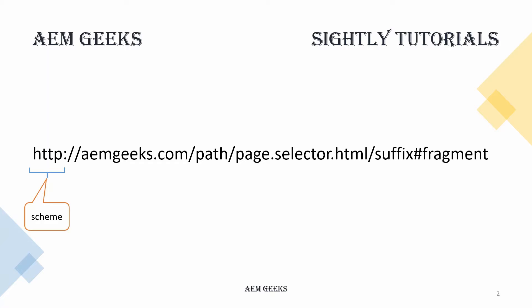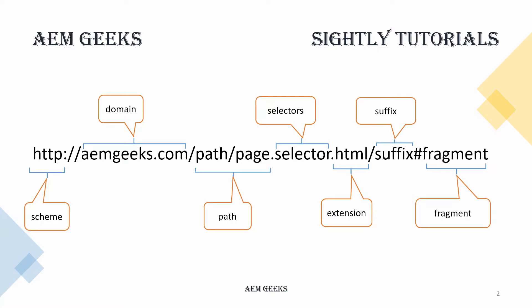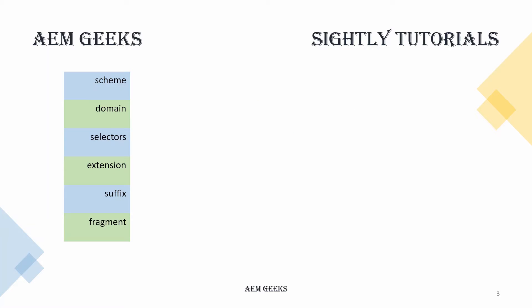The first part is the scheme — in expression language or in Sitely this is called scheme. Then there is the domain, and whatever path comes after the domain is called the path. After the path you have selectors — you can have more than one selector, separated by dots like selector1.selector2.selector3. Then you have the extension, followed by suffix (you can have more than one suffix), and finally fragments.